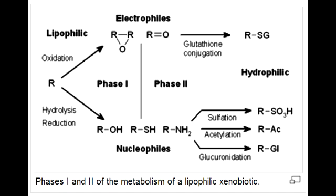Describe all the things that occur in Phase 2 drug metabolism. In Phase 2 drug metabolism, there is conjugation, which includes glucuronidation, acetylation, and sulfation. This usually yields a very polar, inactive metabolite, which is renally excreted.